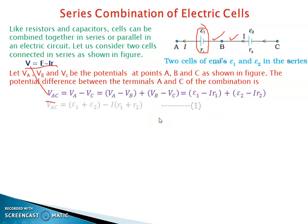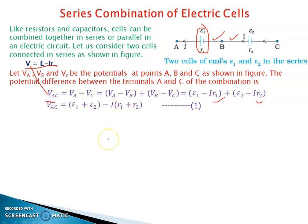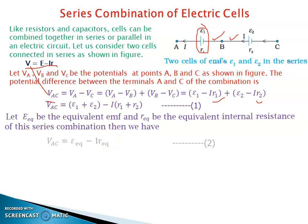This can be written as E1 − IR1 + E2 − IR2, which is the net potential difference across the combination. Rearranging, we get (E1 + E2) − I(R1 + R2). So the equivalent EMF of this combination is E1 + E2, and the net internal resistance is R1 + R2.